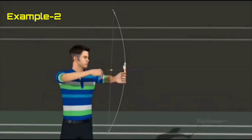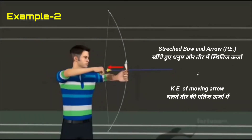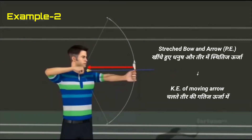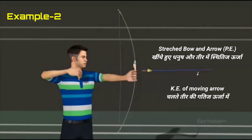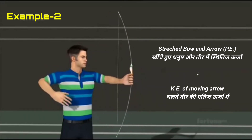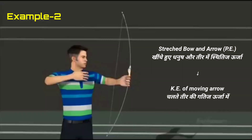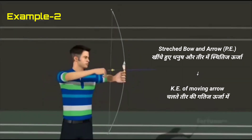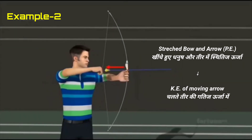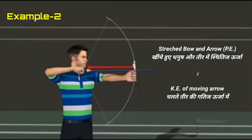Example 2: A stretched bow and arrow has potential energy. When the arrow is released, potential energy is converted into kinetic energy of the moving arrow.